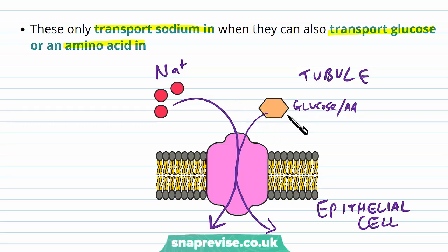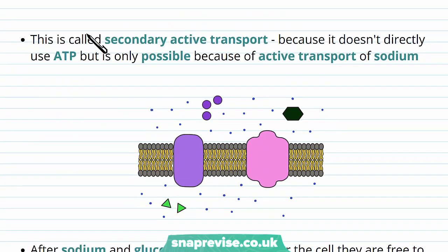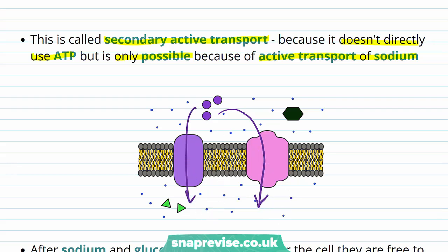This kills two birds with one stone: glucose goes through and so does the sodium, and now the glucose can get to the blood as well. The sodium levels inside the cell are kept low because the pump at the basal side is actively sending sodium out into the blood using energy. This draws sodium in through the co-transporter along with glucose and amino acids, up their concentration gradient. This method is called secondary active transport — it doesn't directly use ATP like normal active transport, but it is only possible because of the active transport of sodium at the basal side, which drives the gradient that then drives this process.